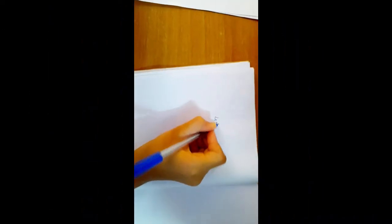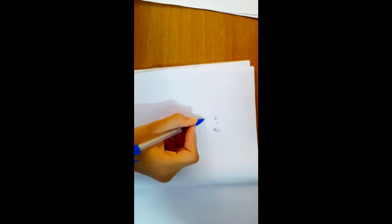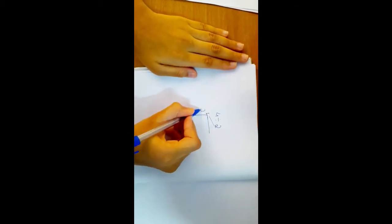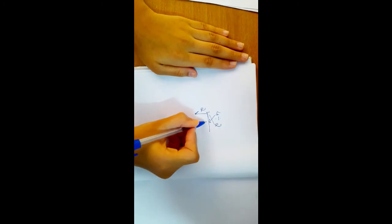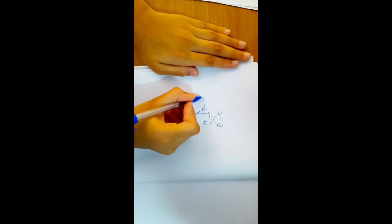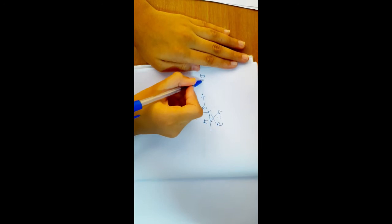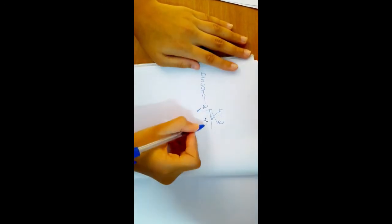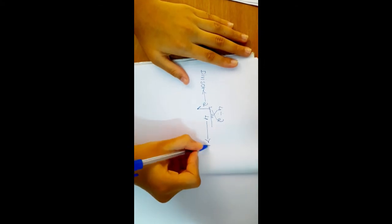4 divided by 2. 2 comes here and 4 comes here. This is divisor. Okay. And this is dividend.